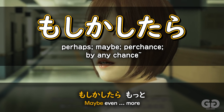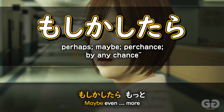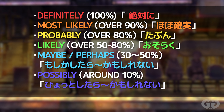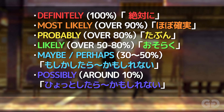So as you can see, moshikashitara is a very useful piece of grammar to make about a 30% to 50% guess about something's likelihood. Maybe. Or perhaps.